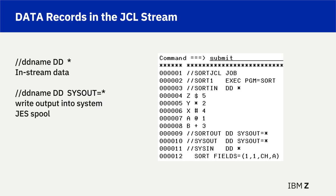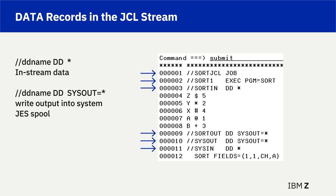DD asterisk tells the system that what follows are data records. DD SYSOUT equal asterisk tells the system to write output to the system-controlled JES spool. The reason for using DD asterisk and DD SYSOUT equal asterisk in the example is to simplify JCL execution explanation. Observe that lines 4 through 8 are the data records that SORT will read from the SORT-IN DD name, and line 12 is a data record that SORT will read from the SYSIN DD name. Line 12 is the sort control statement. The example JCL has one JOB statement, one EXEC statement, and four DD statements needed by program SORT.